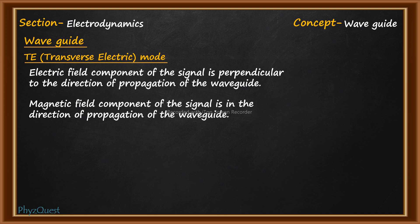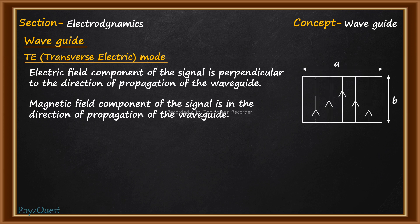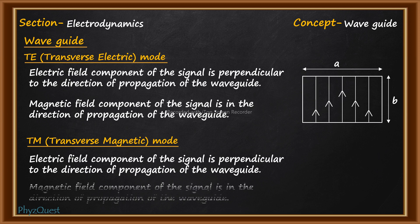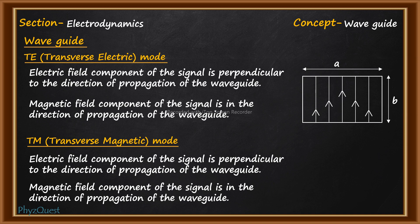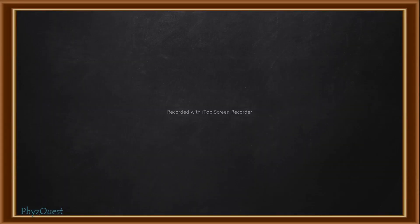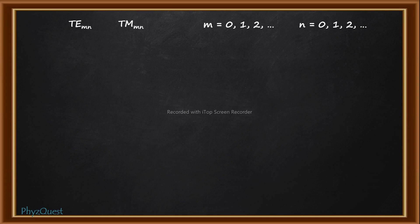For a rectangular cross-section waveguide, the TE mode appears as shown. The second mode is the TM or transverse magnetic mode, where the electric field component is perpendicular to the direction of propagation and the magnetic field component is along the direction of propagation. These modes must satisfy Maxwell's equations and the boundary conditions. Upon solving, the solutions for both TE_mn and TM_mn modes are obtained, where m and n take values from 0 upward, with the condition that both cannot be zero simultaneously.